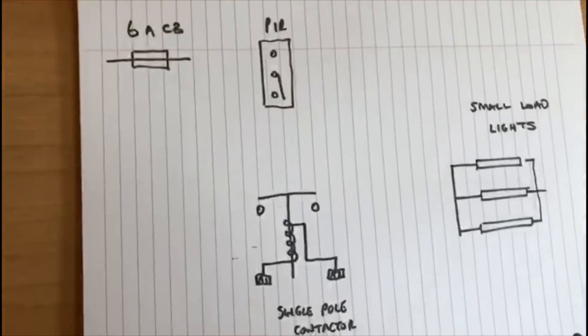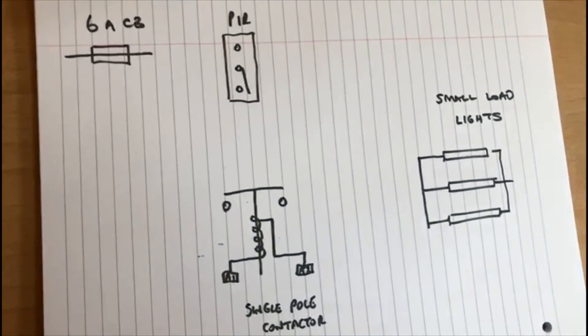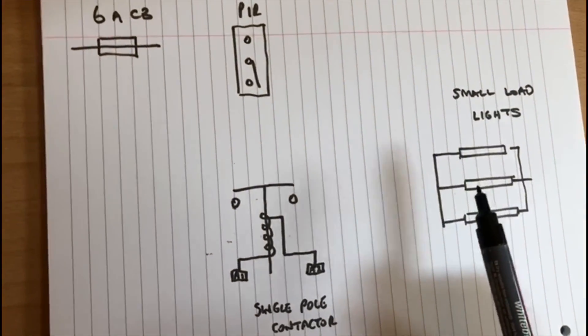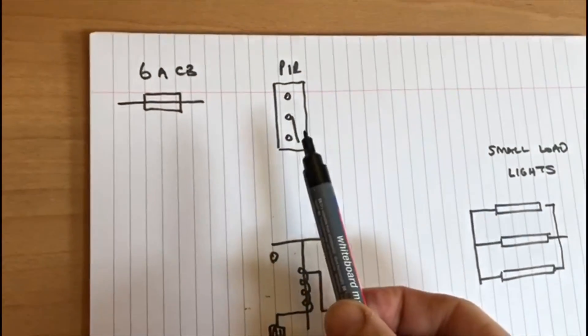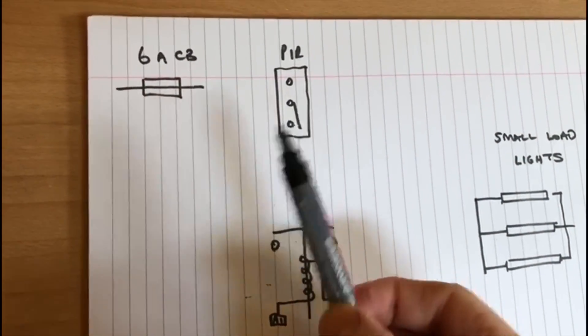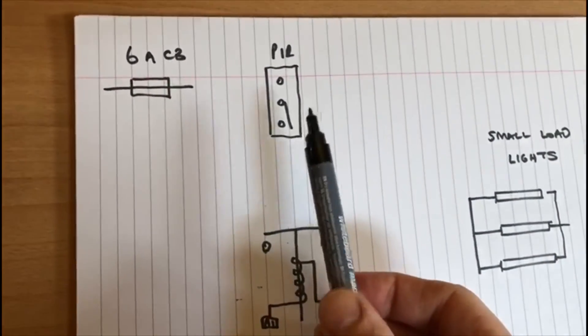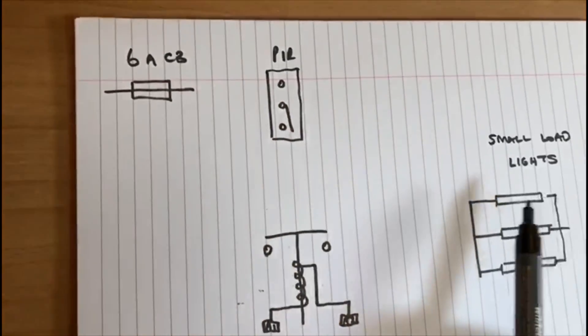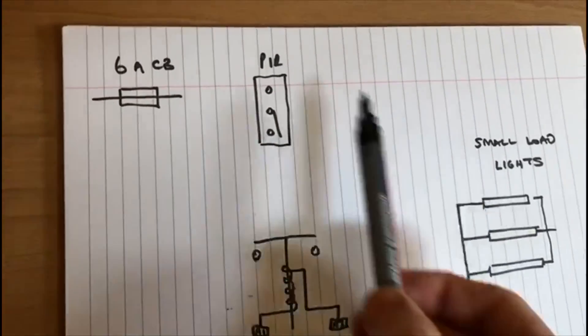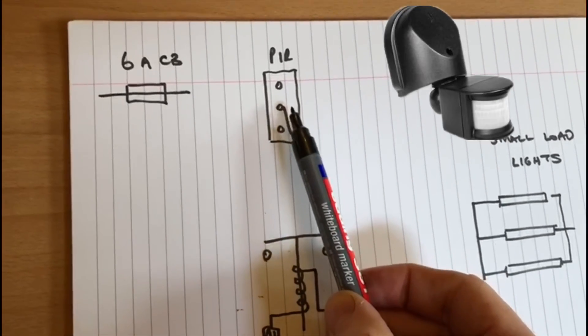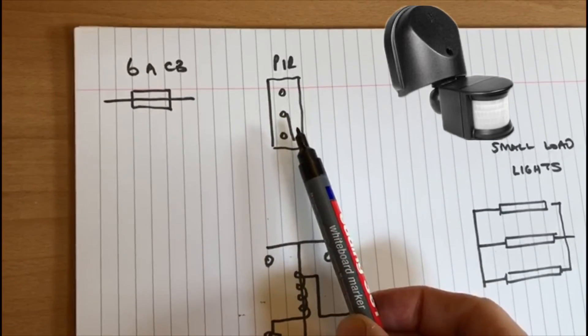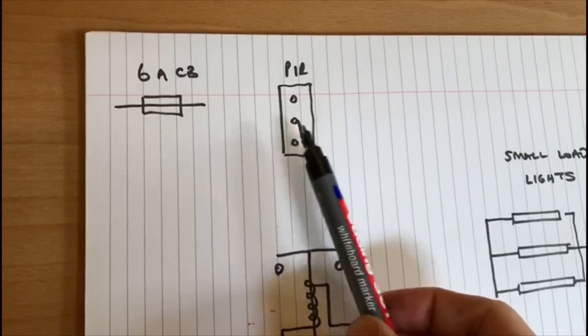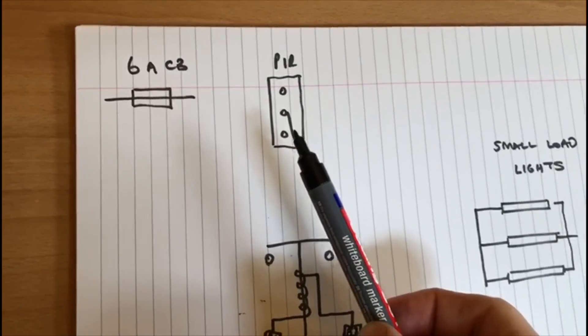Now remember, without using a contactor, the full load that's going through the lights is also being switched through the PIR. In some cases when these are operating, they could be three or four amps. That also means that the three or four amps are going to be switched through the PIR, and I have known these PIRs to sometimes fail because of this.